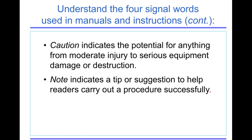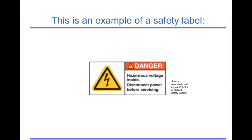So use those terms appropriately in your manuals and instructions. This is an example of a safety label. You've seen these kinds of things. The red indicates warning. We've got the yellow upside down yield sign with the exclamation point. Danger, high voltage. So make sure you use the appropriate warning symbols as well when you're creating manuals or instructions.